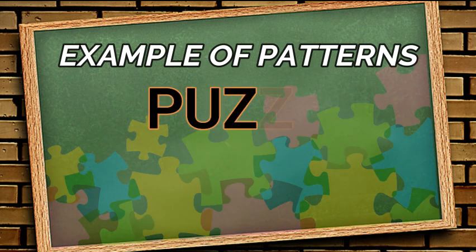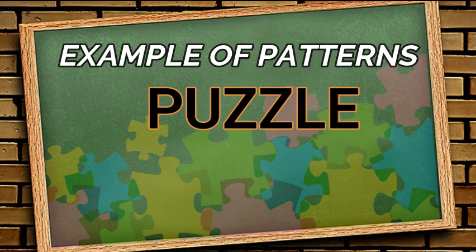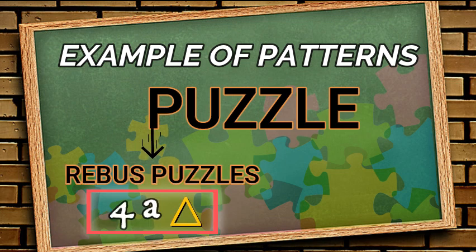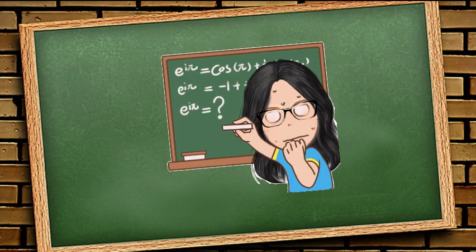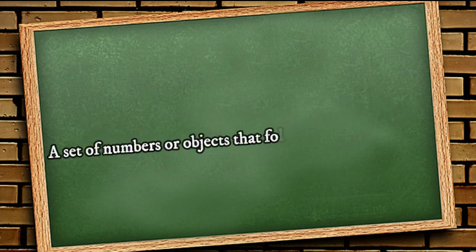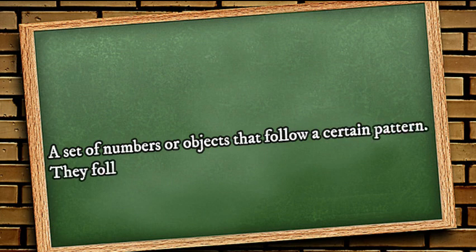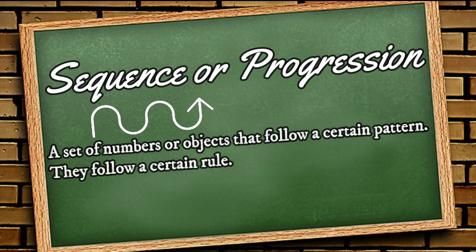Most puzzles also have patterns including rebus puzzles and games like Rubik's cubes. As we have mentioned earlier, not only objects follow patterns but also numbers. In mathematics, a set of numbers or objects that follow a specific pattern is called the sequence or progression.